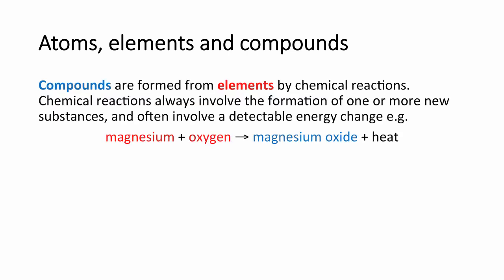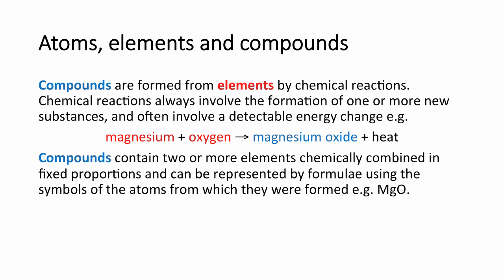Compounds are formed from elements by a chemical reaction. Chemical reactions involve the formation of one or more substances and often involve a detectable change in energy. For example, the reaction of magnesium and oxygen, both elements, to form magnesium oxide, a compound, releases lots of heat and light. The definition of a compound is something that contains two or more elements chemically combined in fixed proportions and can be represented by a formula using the symbols of the atoms from which they are formed. For example, MgO representing Mg and O in the fixed proportion 1 to 1.